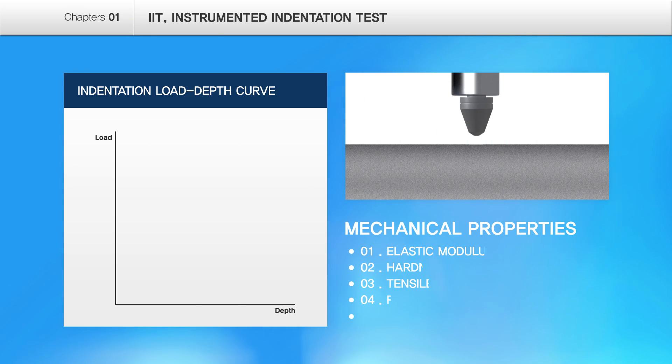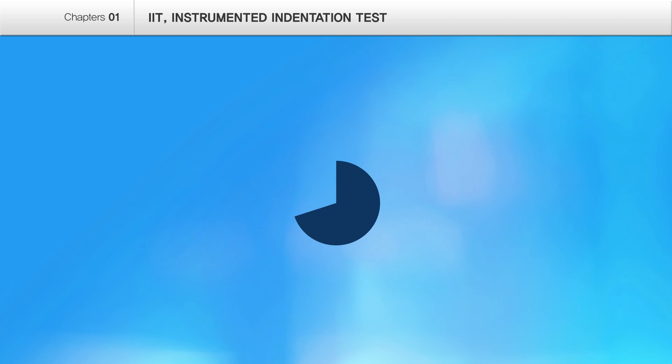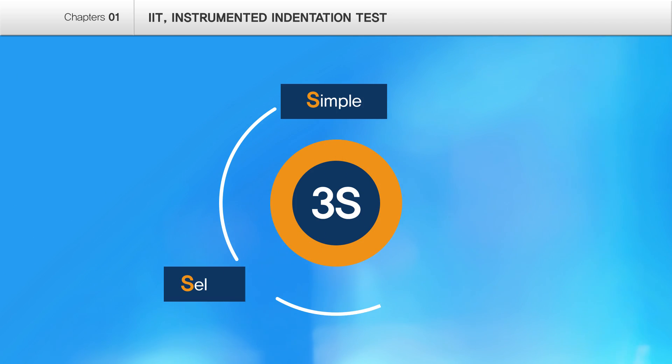Unlike conventional hardness test, IIT measures penetrated depth and applied load during loading and unloading operation, and it is the technology of getting a continuous curve of load and depth to get versatile properties precisely in non-destructive method. Load depth curve from IIT represents the uniqueness of each material, like the fingerprint of human.